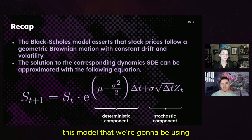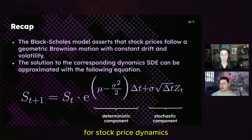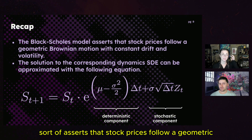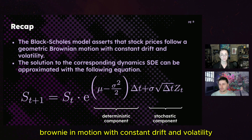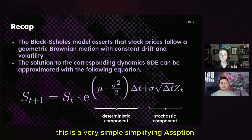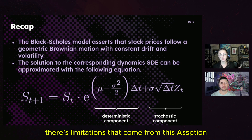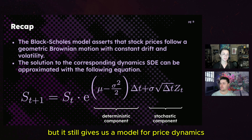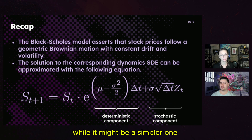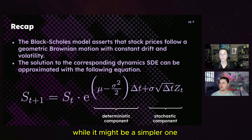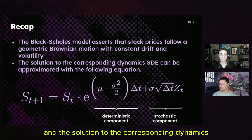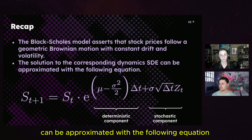This comes from the Black-Scholes model. The model we're going to be using for stock price dynamics asserts that stock prices follow a geometric Brownian motion with constant drift and volatility. This is a simplifying assumption with limitations, but it still gives us a model for price dynamics, and the solution to the corresponding stochastic differential equation can be approximated with the following equation.